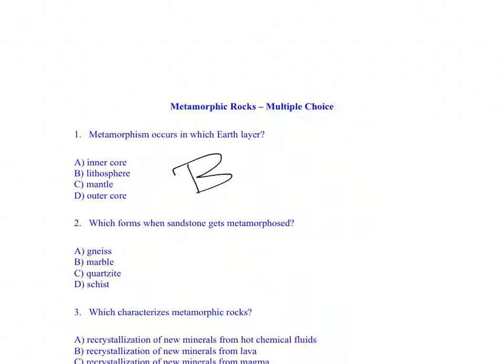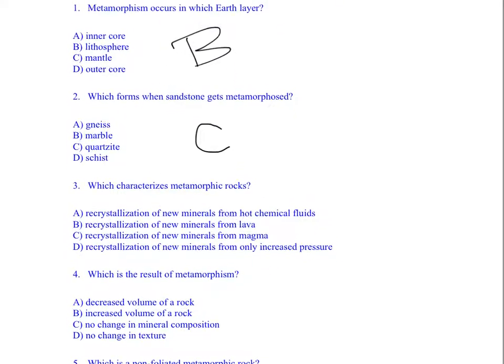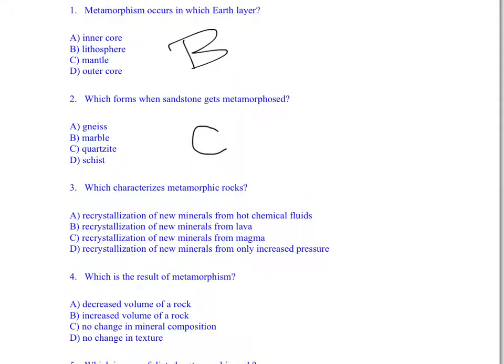When sandstone gets metamorphosed, it gets metamorphosed into a low-grade metamorphic rock called quartzite. Which characterizes metamorphic rocks? Recrystallization of new minerals. So the question is, the recrystallization of new minerals comes from what? And the answer is from hot chemical fluids, definitely not from lava or magma. So the answer is A.